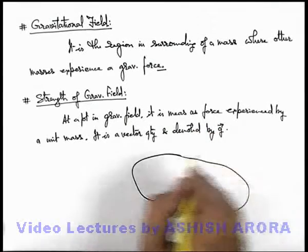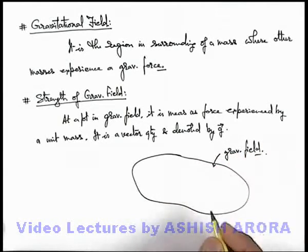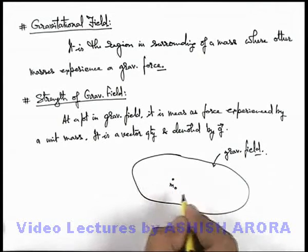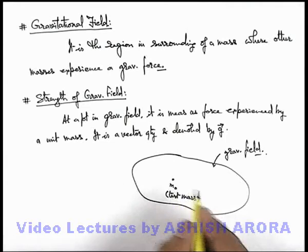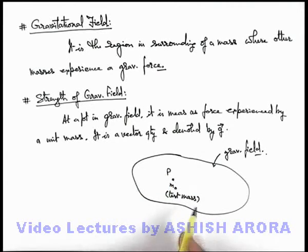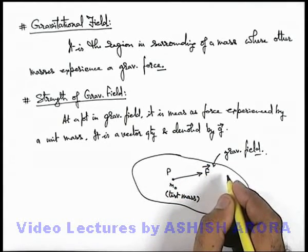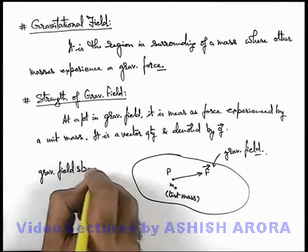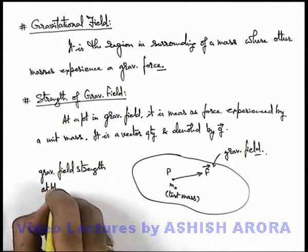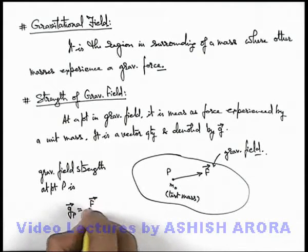Say if we are having a region which we are denoting as gravitational field, then in this region say we place a point mass m-naught, which is generally termed as a test mass — we'll discuss test mass in detail — which is used to test gravitational field strength in a region. Say this is a point P where a test mass m-naught is placed, and as soon as we place the mass m-naught, say it experiences a force F vector in a specified direction.